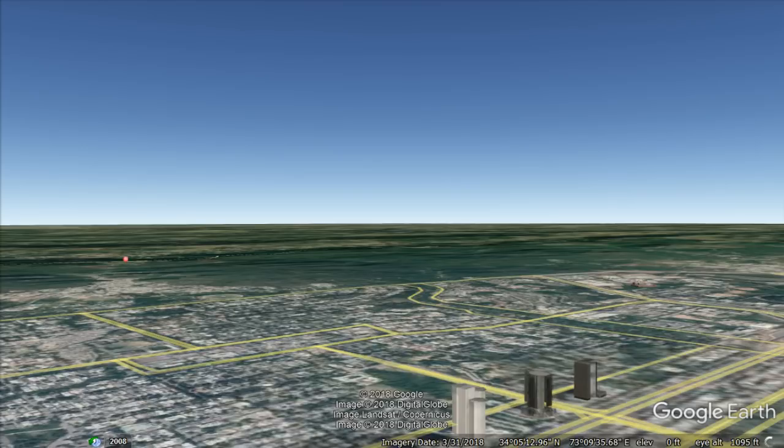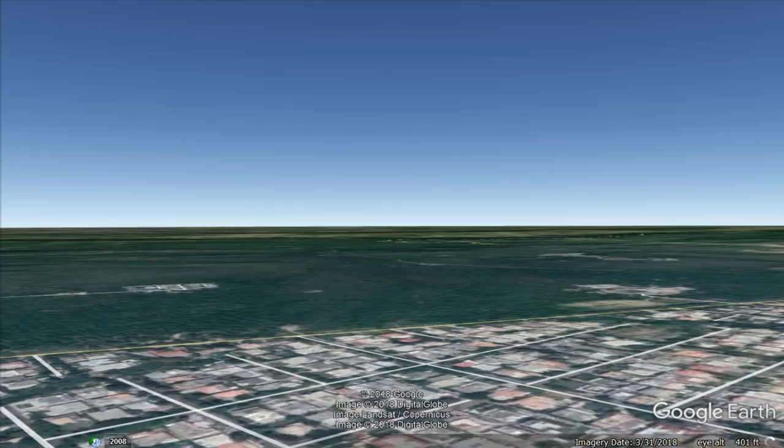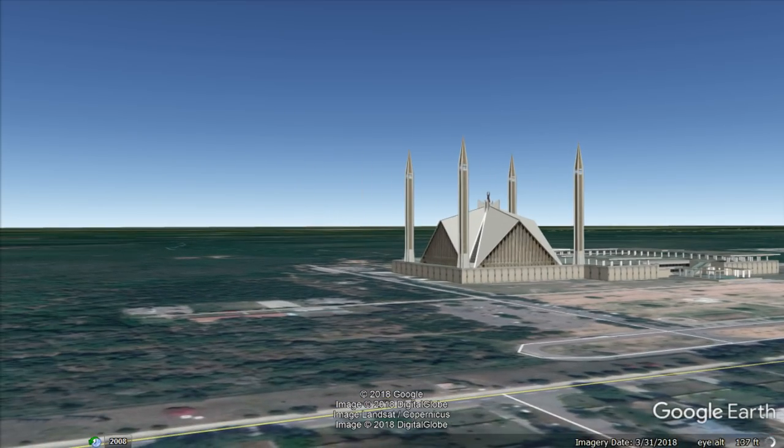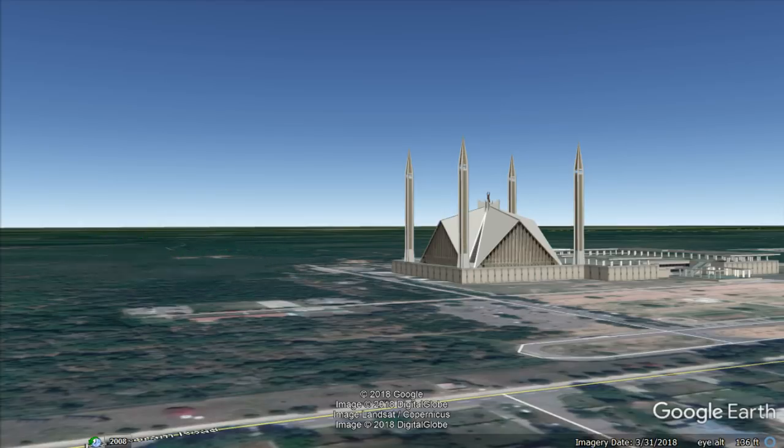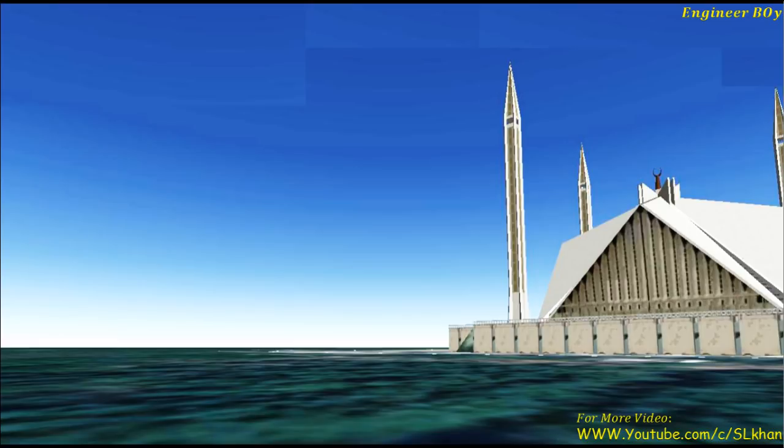We'll discuss a simple method of finding the height of an object when it is accessible and there is level ground in front of it. Let the height of the shown tower be found.